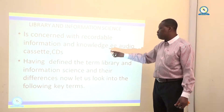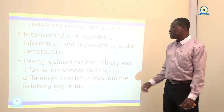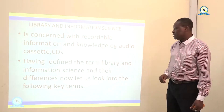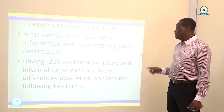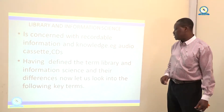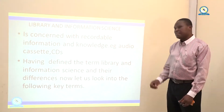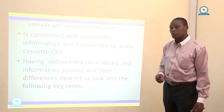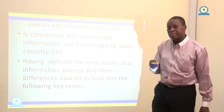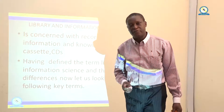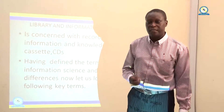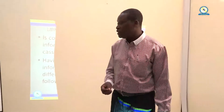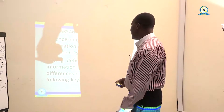Library and information science is concerned with codable information and knowledge — for example, how to process information. Having defined the terms library science and information science and their differences, let us now look into the following key terms which are relevant in the field of library and information science.